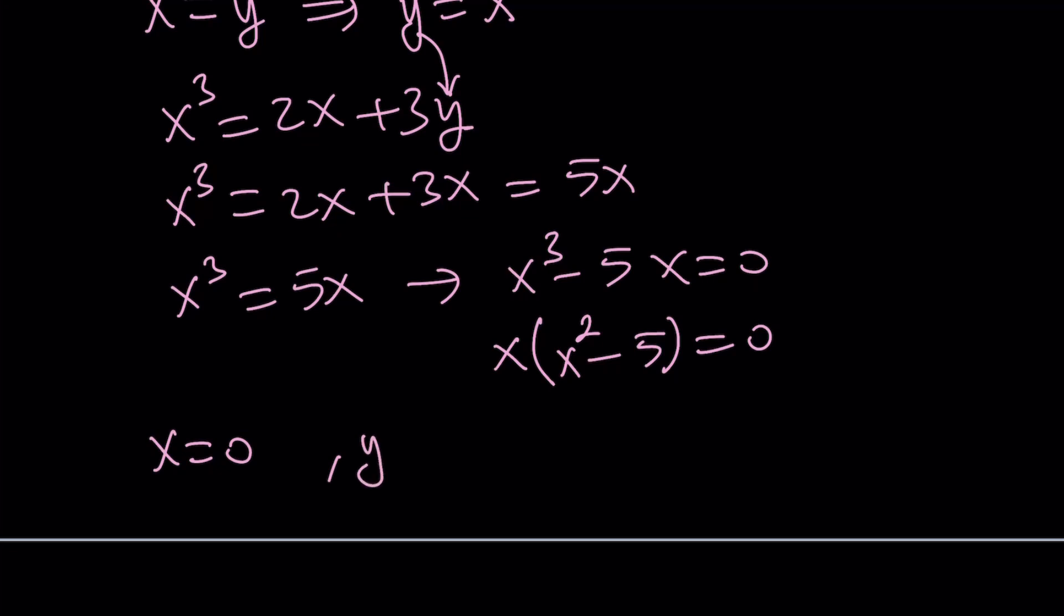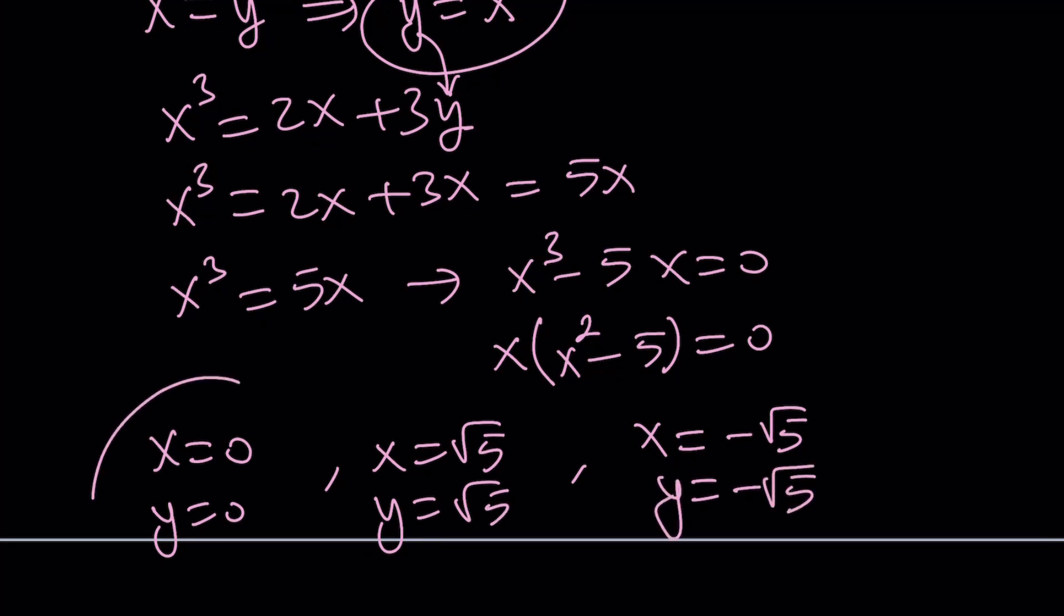From here we get three solutions. x = 0, x = √5, and x = -√5. Since x and y are equal in this case, then we get y = 0, y = √5, and y = -√5. So we get three ordered pairs as our solution.